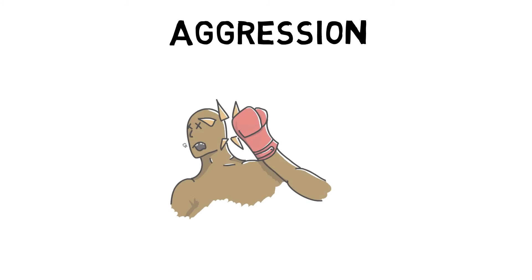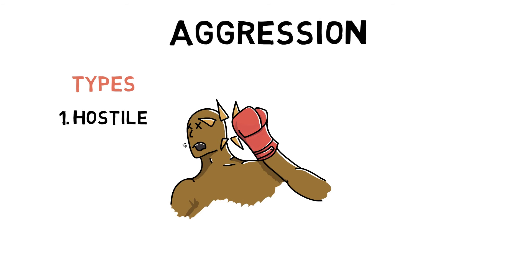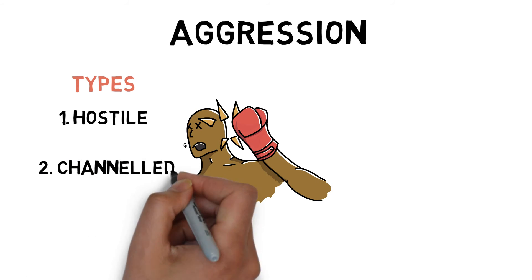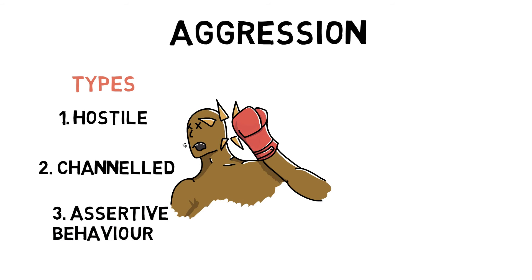There are three different types of aggression. Hostile aggression is behaviour outside of the laws of the game with intention to harm another person and inflicted with anger, such as throwing a punch in the middle of a game. Channelled aggression is behaviour that is within the laws of the game but has the side effect of inflicting harm or physical pain, such as going hard into a tackle. And assertive behaviour is aggressive behaviour that aims to achieve a goal using legitimate force, where any injury caused is accidental, such as jumping for a 50-50 ball.